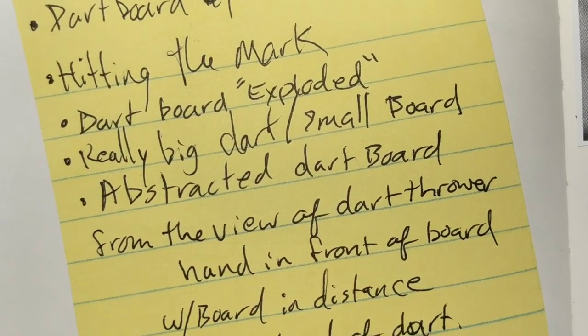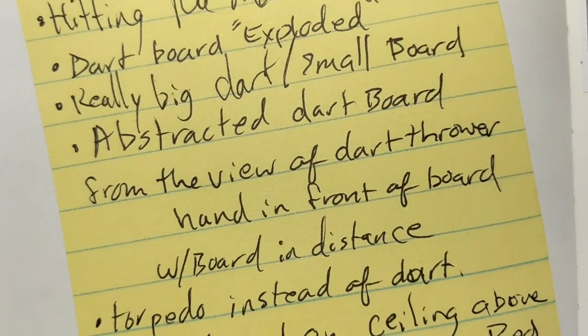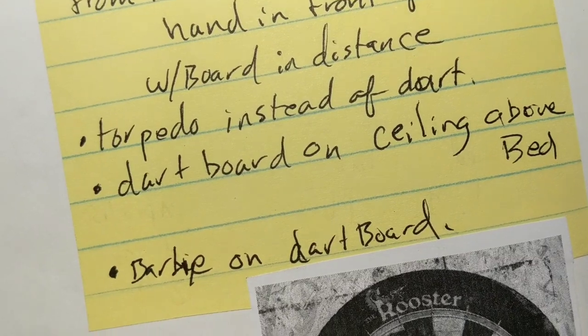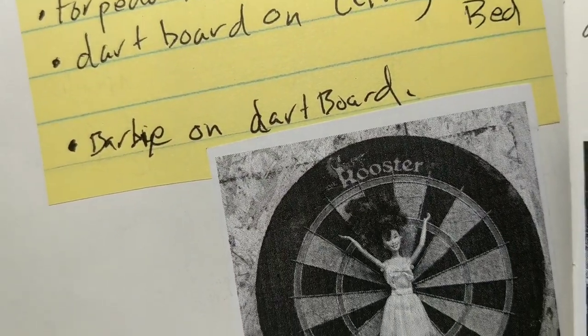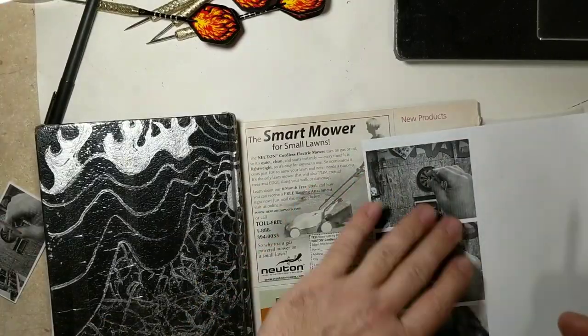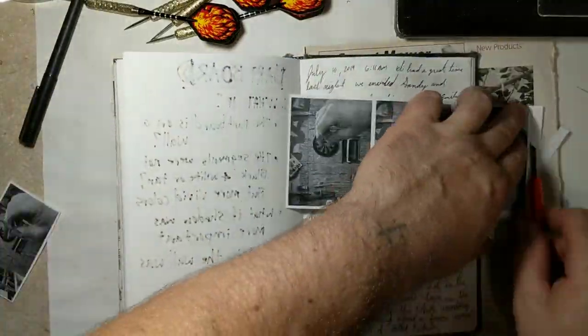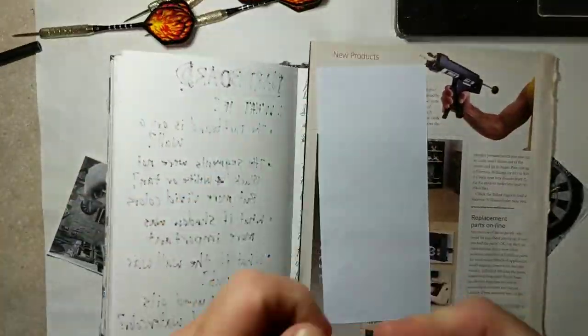And work is generally better from a reference photo than from the top of your mind. So there's what I wrote on the yellow paper, including Barbie on a dartboard. I don't know if I'll do that one or not. I kind of try to figure out what sort of story I'm trying to tell there.